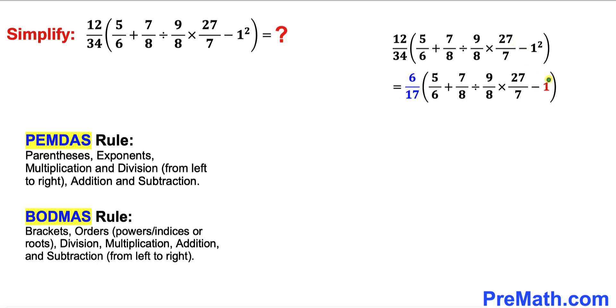As you can see in this next step I have replaced this 1 square by 1 over here. At the beginning 12 divided by 34 has been reduced to 6 divided by 17, and the next thing is multiplication or division whichever comes first from left to right, and we can see that division comes first.